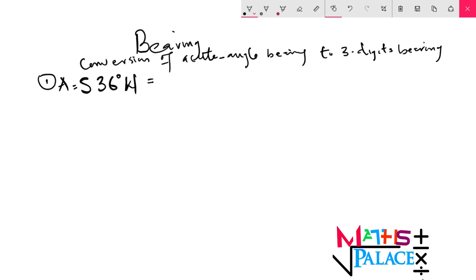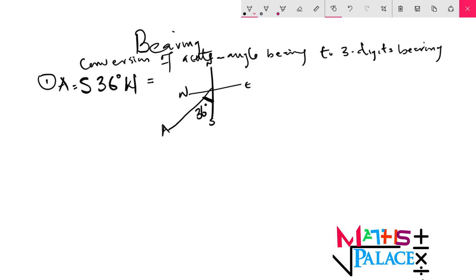How do we represent this in three-digit bearing? To convert south 36 degrees west to three-digit bearing, we shall be using our cardinal points — north, east, south, and west. South-west means we'll start from the south and go towards the west. So this is our south here, we'll move towards the west 36 degrees. So this is our 36 degrees, and these are point A.